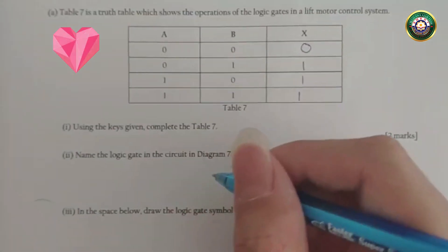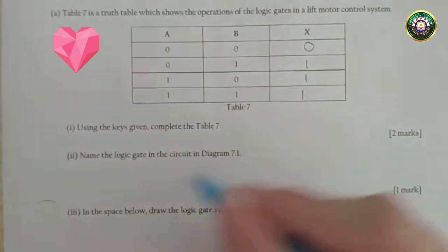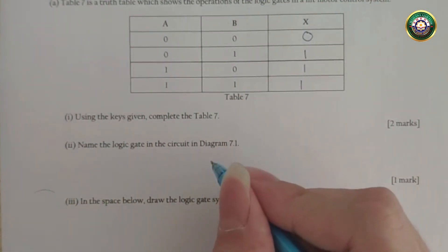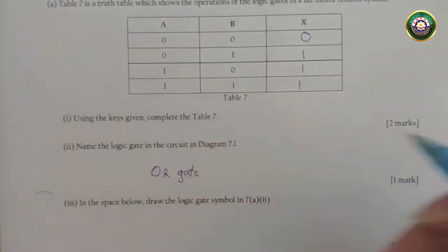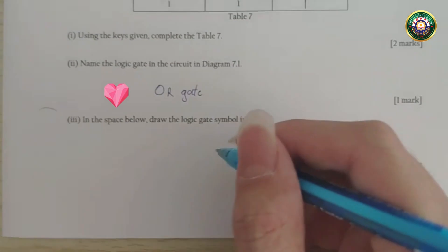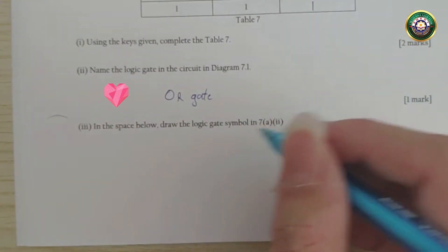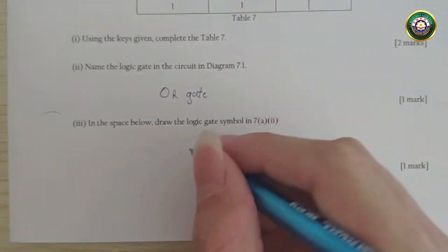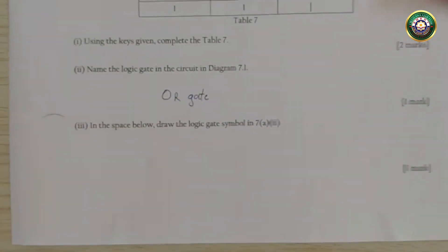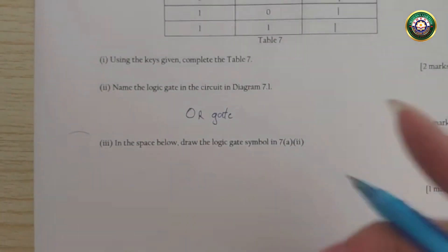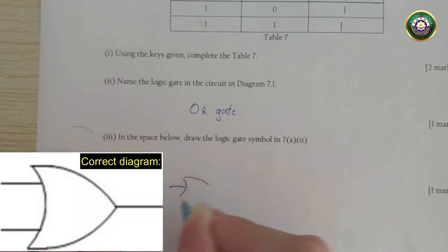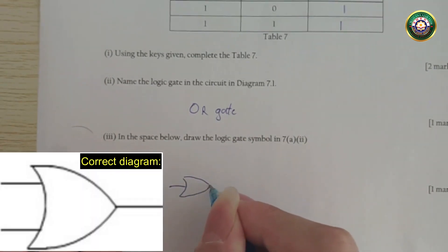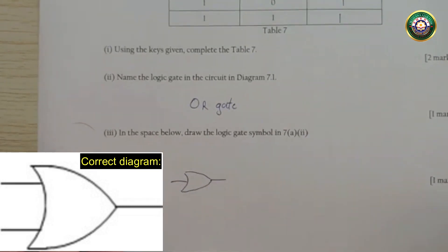And then using the keys given complete table 7. Okay that's done. Name the logic gate in the circuit in 7.1, OR gate. In the space below, draw the logic gate symbol in 7A2. Okay, just give me a second. That's how you draw it.